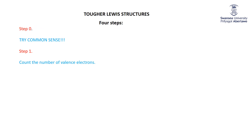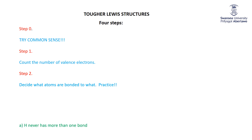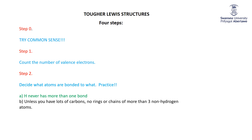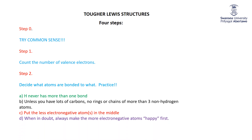Step two: decide what atoms are bonded to what. This is the most complicated part — it requires practice, practice, practice. A lot of it is common sense and experience. There are some guidelines, some close to rules. One rule: hydrogen never has more than one bond. Next: unless you have lots of carbon atoms, don't use rings, and don't use chains of more than three non-hydrogen atoms. It's much more appropriate to have a cluster molecule. You always generally want to put the less electronegative atoms in the middle. When in doubt, always make the more electronegative atoms happy first.